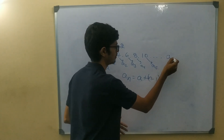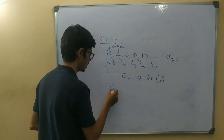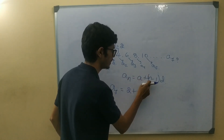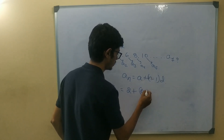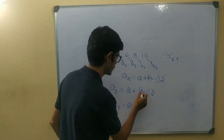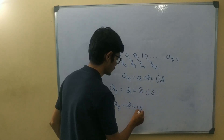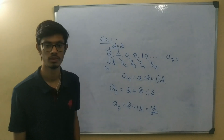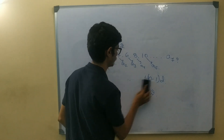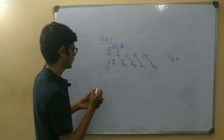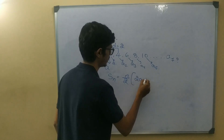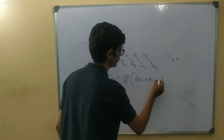For example, let's find the 7th term of the sequence 2, 4, 6, 8. A7 is equal to a — which is 2 — plus n minus 1, where n is 7, so 7 minus 1 is 6, into d which is 2. So A7 equals 2 plus 6 into 2 equals 2 plus 12 equals 14.